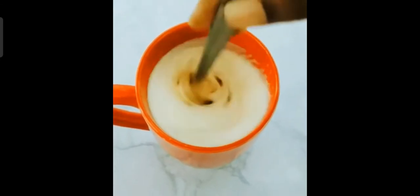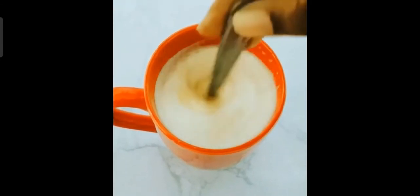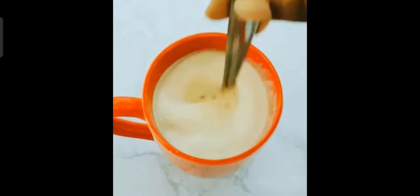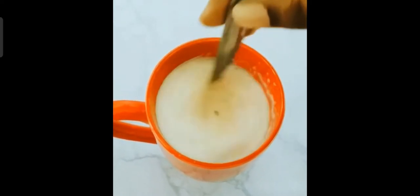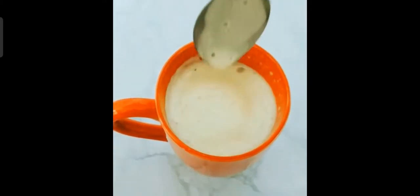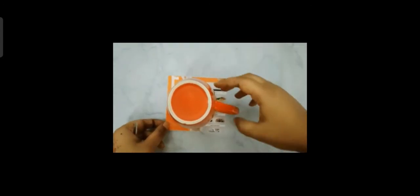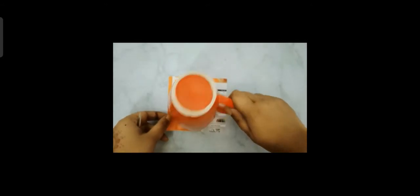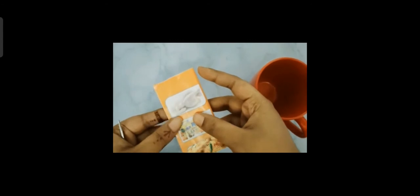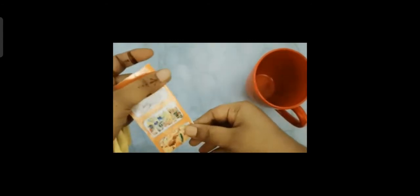First you need a piece of paper to make a stencil. Measure in such a way that it is one centimeter extra than the rim of the cup. Later cut the shape of your choice. Today I am going to cut a heart shape.